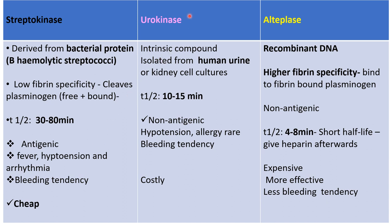Urokinase is an intrinsic compound isolated from human urine or kidney cell culture. Its half-life is 10 to 15 minutes. It is non-allergic; hypotension and allergy are rare. Bleeding tendency is present and it is costlier than streptokinase.